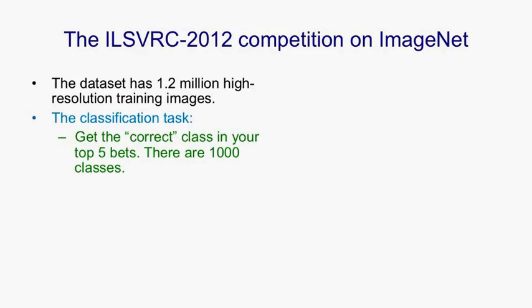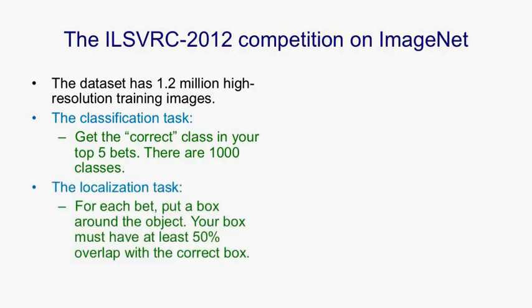To make the task feasible, the computer vision system is allowed to make five bets, and it's said to get it right if one of those bets corresponds to the label a person has given the image. There's also a localisation task. Many computer vision systems use a bag-of-features approach — for the whole image or a quadrant, they know what the features are but not where they are, allowing object recognition without knowing exact location.